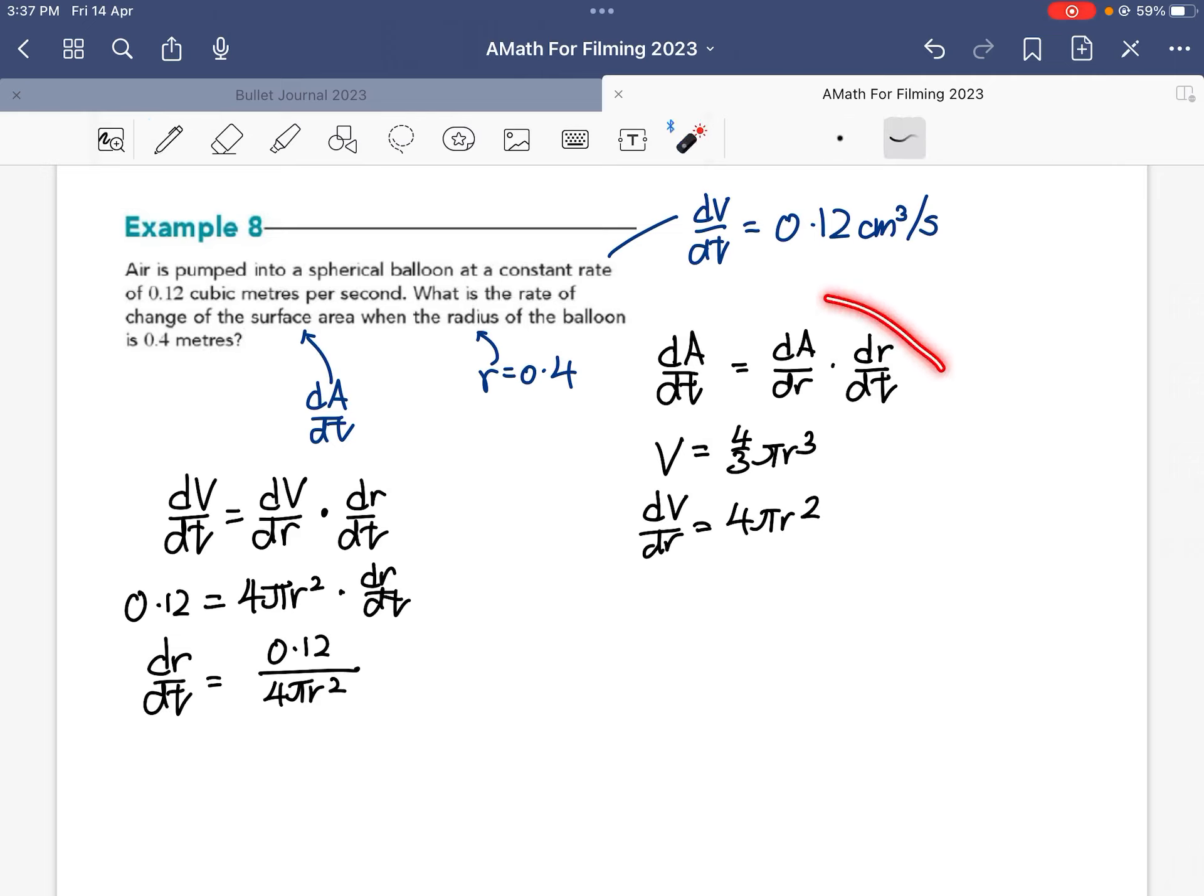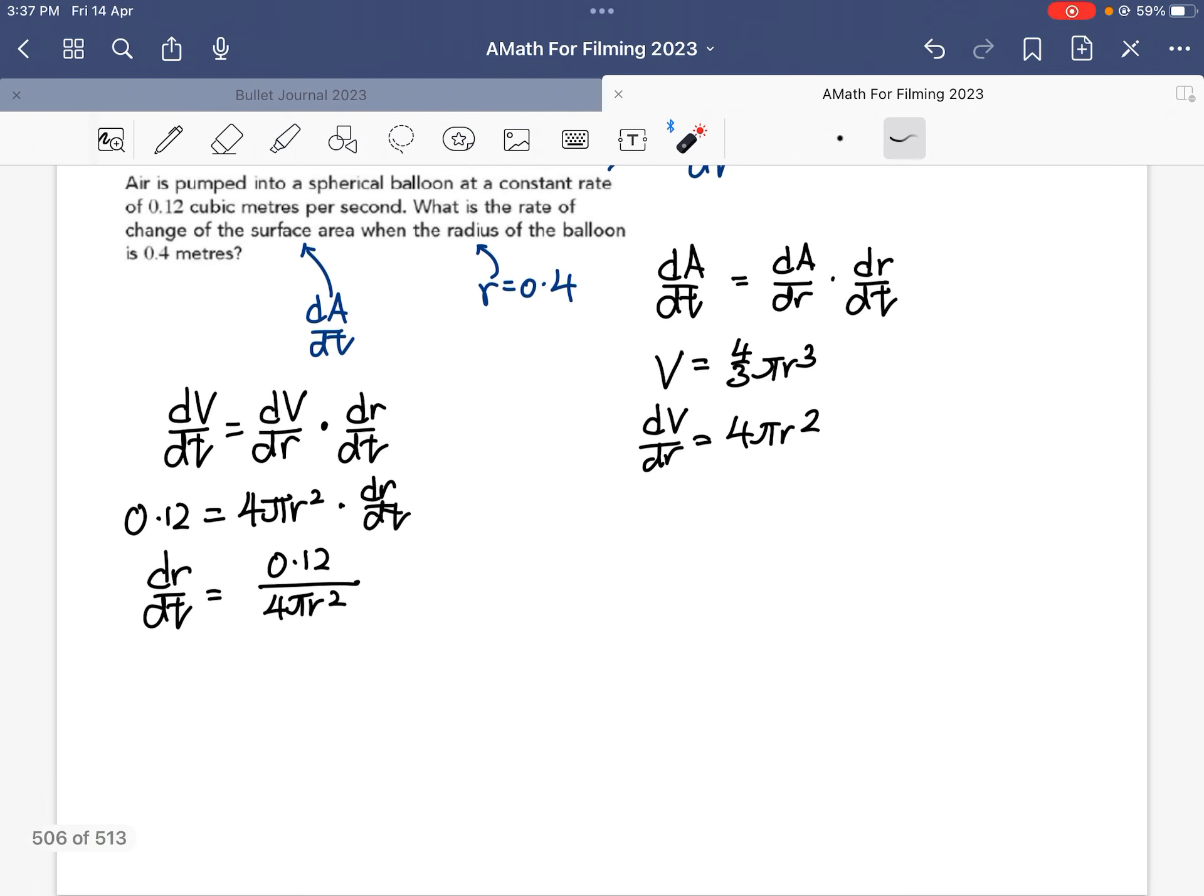I have my expression for rate of change of radius with respect to time. So now I can go back to my original intent, which is to solve this which I have highlighted. I can say this: rate of change of area with respect to time is you differentiate A with respect to r, then multiply by the rate of change of radius with respect to time, dr/dt.